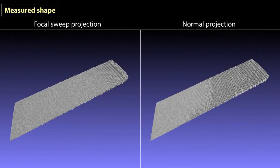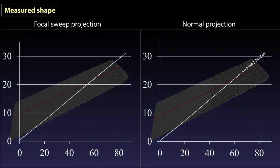From the measured shapes, we see that the error was smaller with focal sweep projection than normal projection.